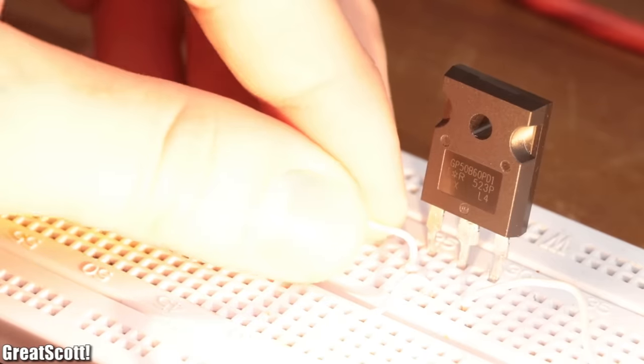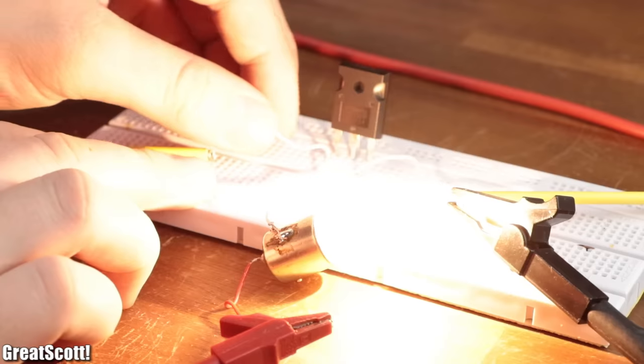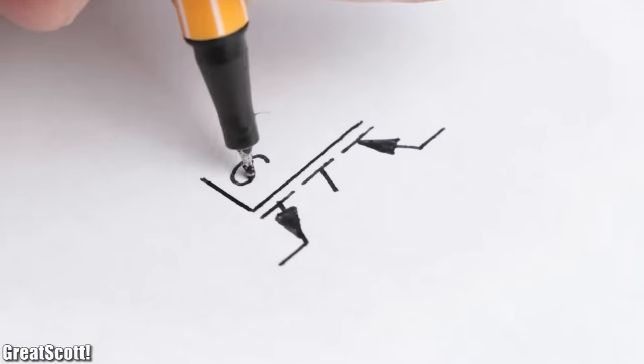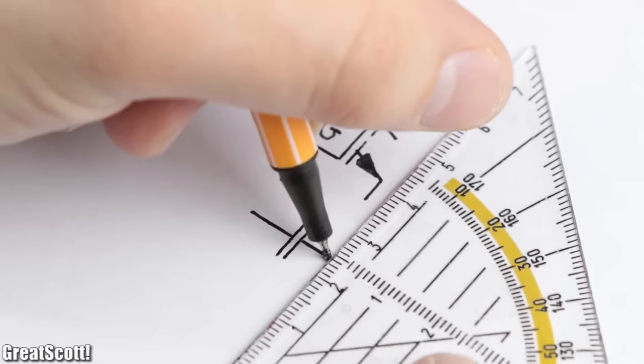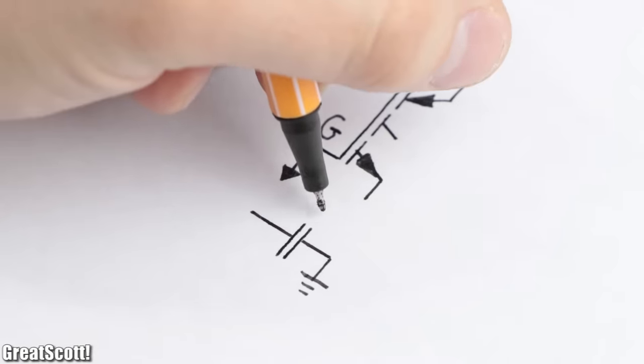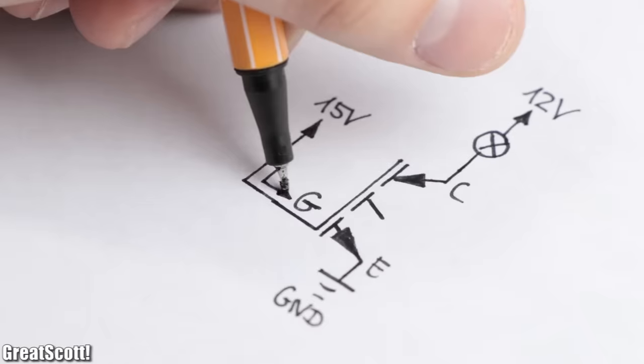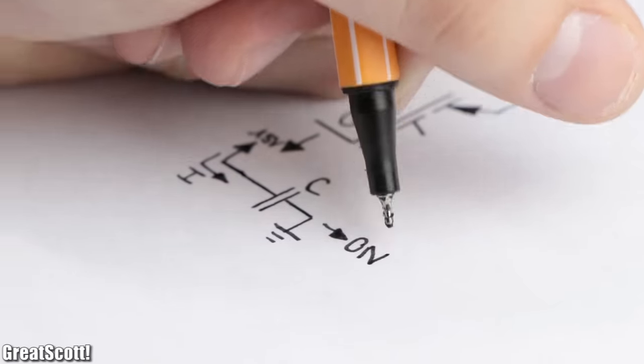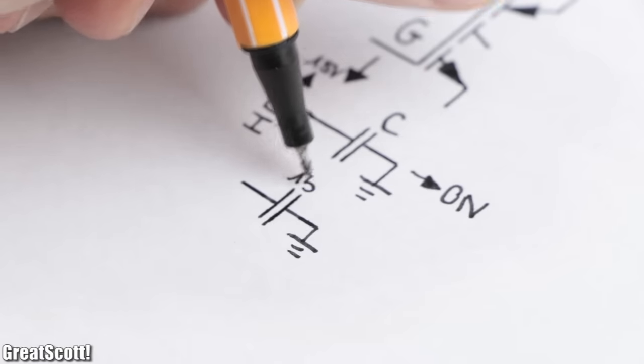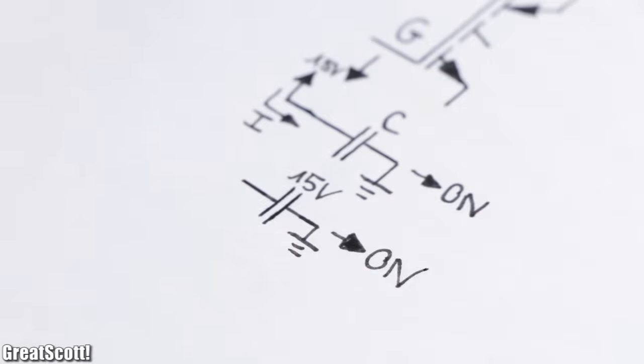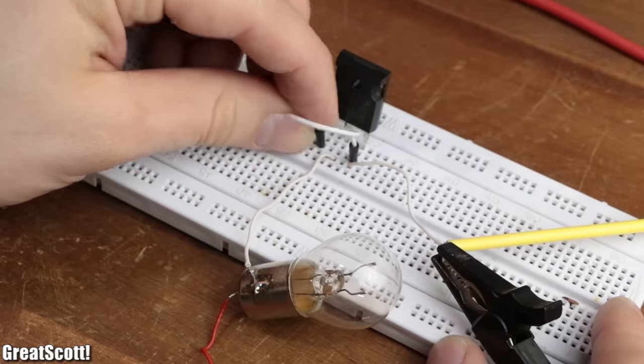Now after removing the voltage source from the gate, the IGBT apparently stays conductive. The reason for that is its gate, which basically behaves like a MOSFET gate and thus can be modeled as a capacitor. While we successfully charged it up through the gate voltage and thus turned the IGBT on, the charge will afterwards just sit there and let the IGBT stay conductive.